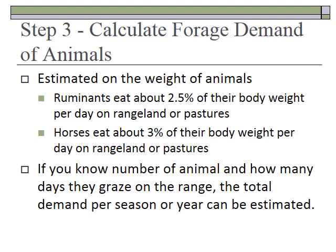The third step, once you have forage supply and have assessed landscape accessibility, is to calculate the forage demand of the animals. You need to figure out what each animal is going to need to eat. Ruminants on average eat about two and a half percent of their body weight per day over the year; horses eat a little more, about three percent. Depending on the type of animal, you can calculate how much your herd needs if you know the number of animals and how many days they'll be on the range.